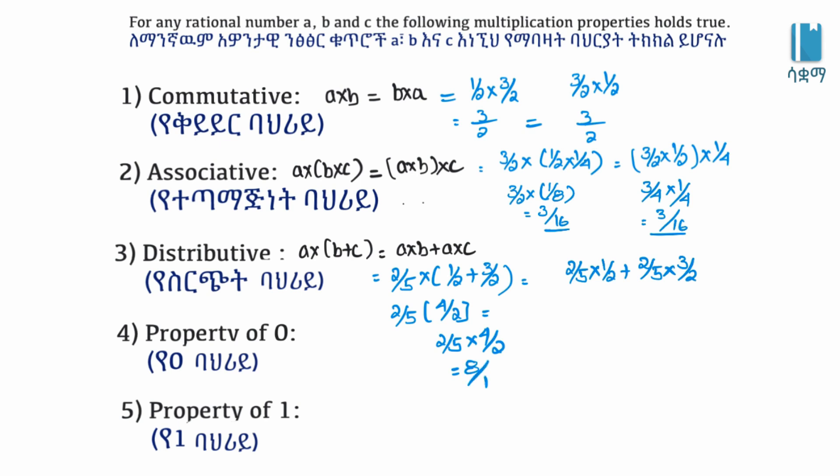4 over 2. So 2 over 5 times 4 over 2: 2 times 4 is 8, 5 times 2 is 10, giving 8 over 10. The other way: 2 over 10 plus 6 over 10 equals 8 over 10. So rational numbers have distributive properties.